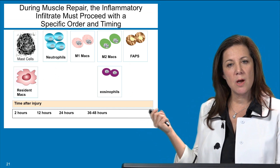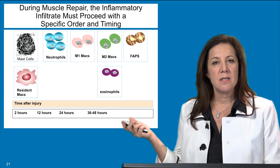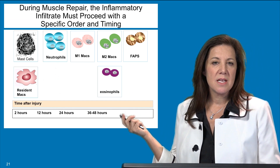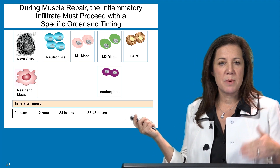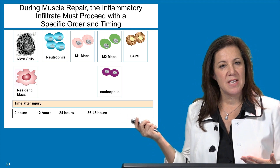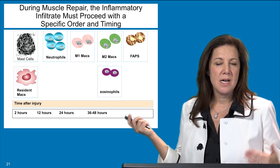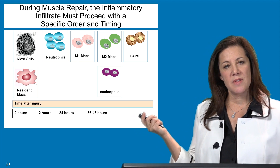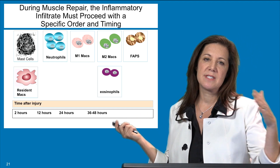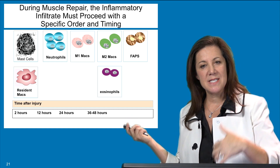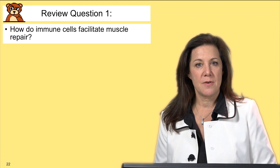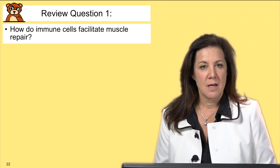The key takeaway from this lecture is that the order, timing, and appearance of immune cells is critical to orchestrate proper muscle repair. Early on you have mast cells, resident macrophages, neutrophils, and M1 macrophages ramping up the immune response. Later you see M2 macrophages, eosinophils, and FAPs ramping down the immune response and facilitating repair.